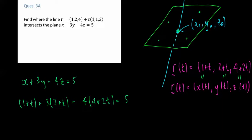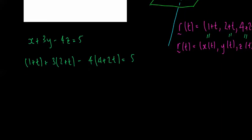Let's expand this out and solve for T. So I've got 1 plus T, plus 6 plus 3T, minus 16, minus 8T, equal to 5.